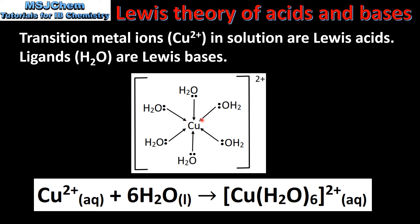The central metal ion, which is the copper 2+ ion, is acting as a Lewis acid by accepting the lone pairs of electrons from the water molecules. The water molecules are donating the lone pairs of electrons on the oxygen atom to the copper 2+ ion, therefore they are acting as Lewis bases. The arrows represent the coordinate covalent bonds formed between the ligands and the central metal ion.